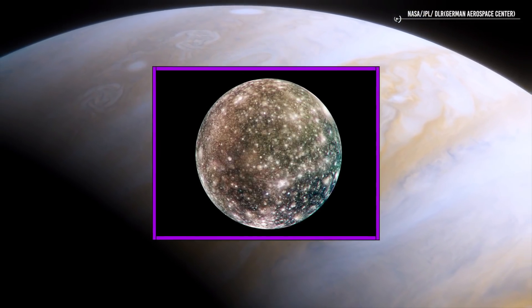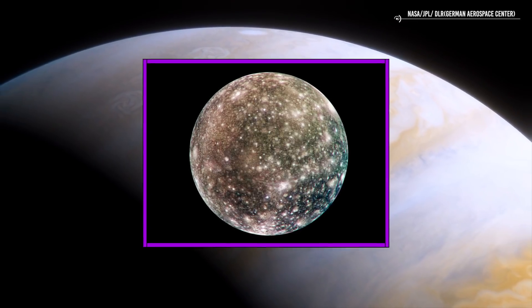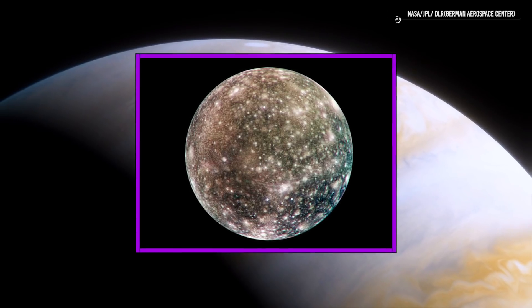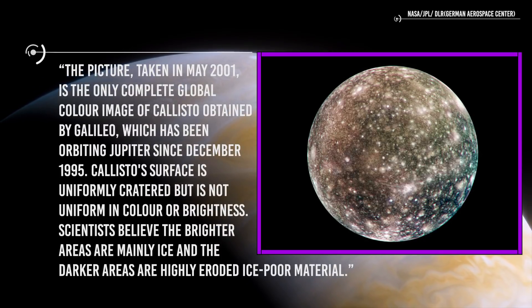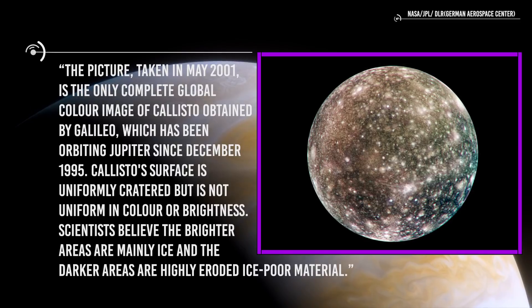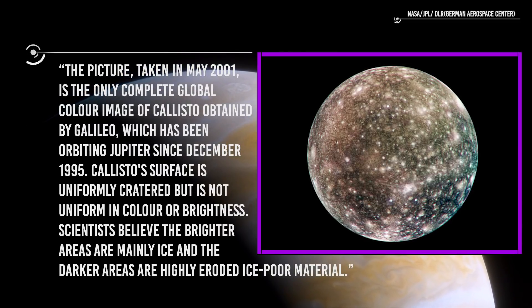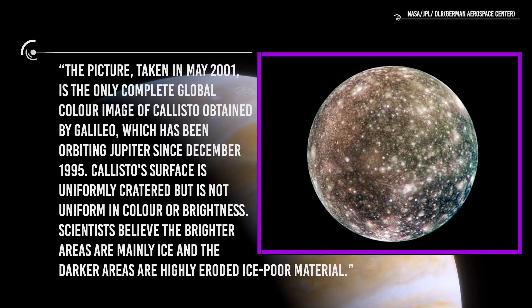Here are of course some pictures taken from Galileo. This one, for example, shows bright scars on a darker surface that testify to a long history of impacts on Jupiter's moon, as we can read on NASA's website. The picture taken in May of 2001 is the only complete global color image of Callisto obtained by Galileo, which has been orbiting Jupiter since December 1995. Callisto's surface is uniformly cratered but is not uniform in color or brightness. Scientists believe the brighter areas are mainly ice and the darker areas are highly eroded ice-poor material.